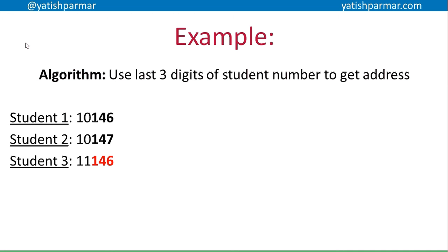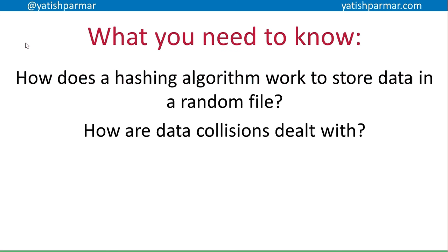So if the hash algorithm points at 146 and we find it occupied, we move along to the next memory section adjacent to that and check if that block is free. If that block of data gets full, a special overflow area of the disk is allocated, and a pointer points to that overflow area so you can retrieve that data extremely quickly. That's how data collisions are handled - store in the next continuous data block, or move to an overflow area leaving a pointer.